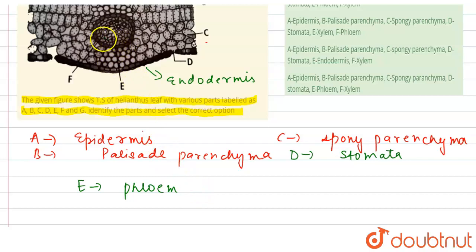And the F part, we could see here - these circular things, they are the xylem. So xylem is also the vascular tissue which is involved in the transportation of water, and phloem is for the food.